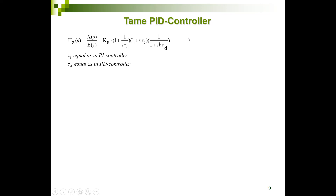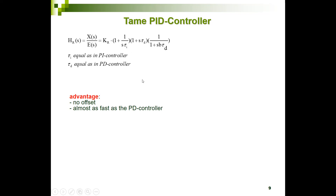When combining everything, we get a tame PID controller. Its transfer function includes the proportional part, the integrating part, the differentiating part, and the low-pass filter of the tame D action. The advantage is no offset due to the integrating action, and it is almost as fast as the standard PD controller.